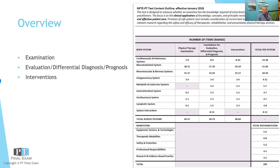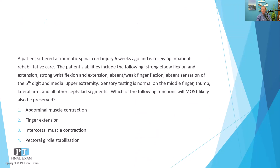Let's dive into our practice question. I'll list the question and the answer options, give you about a minute to determine which answer option you'd like to select, and then we will talk about it together. A patient suffered a traumatic spinal cord injury six weeks ago and is receiving inpatient rehabilitative care. The patient's abilities include: strong elbow flexion and extension, strong wrist flexion and extension, absent or weak finger flexion, absent sensation of the fifth digit and medial upper extremity, and sensory testing is normal on the middle finger, the thumb, lateral arm and all other cephalad segments. Which of the following functions will most likely also be preserved?